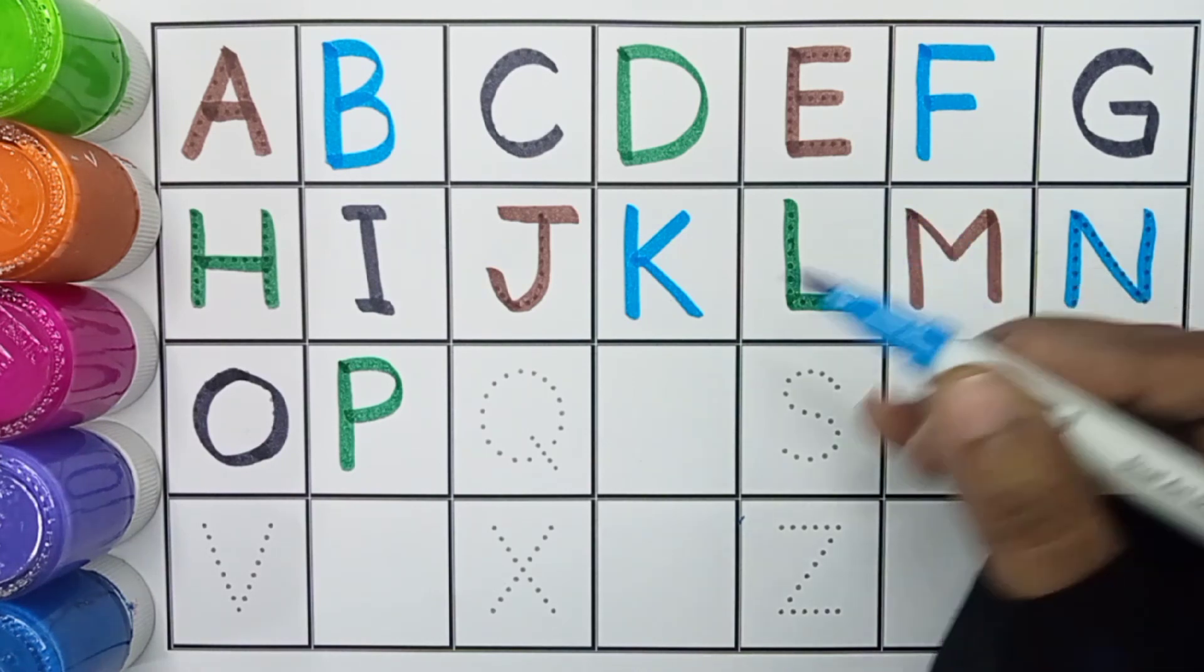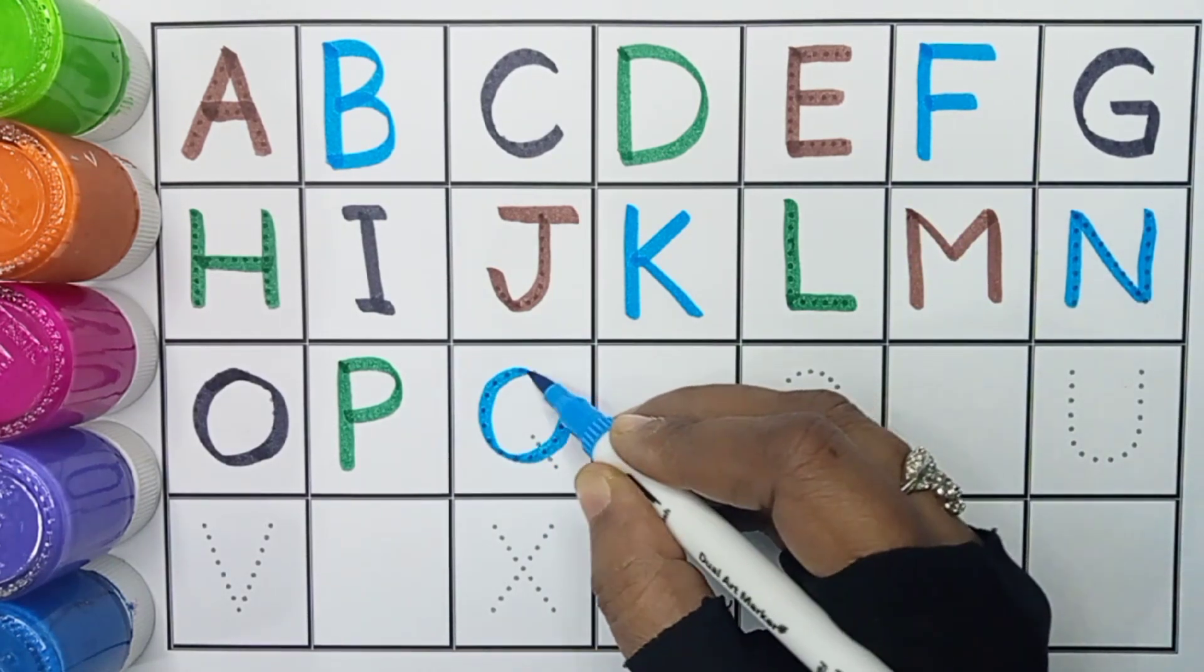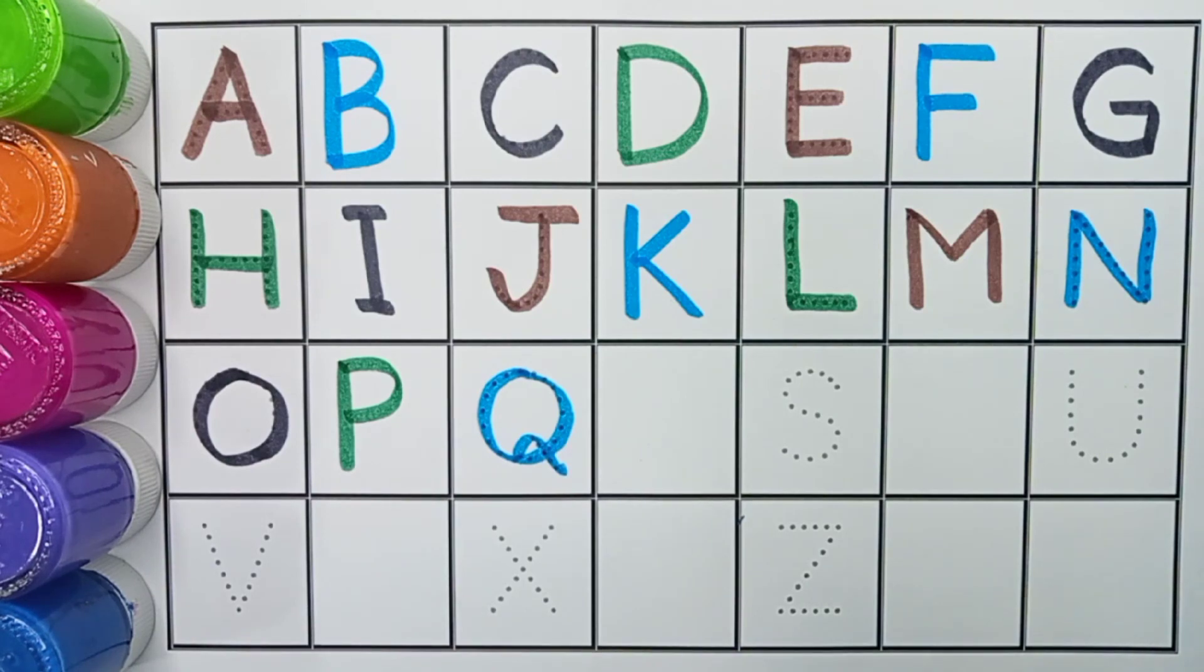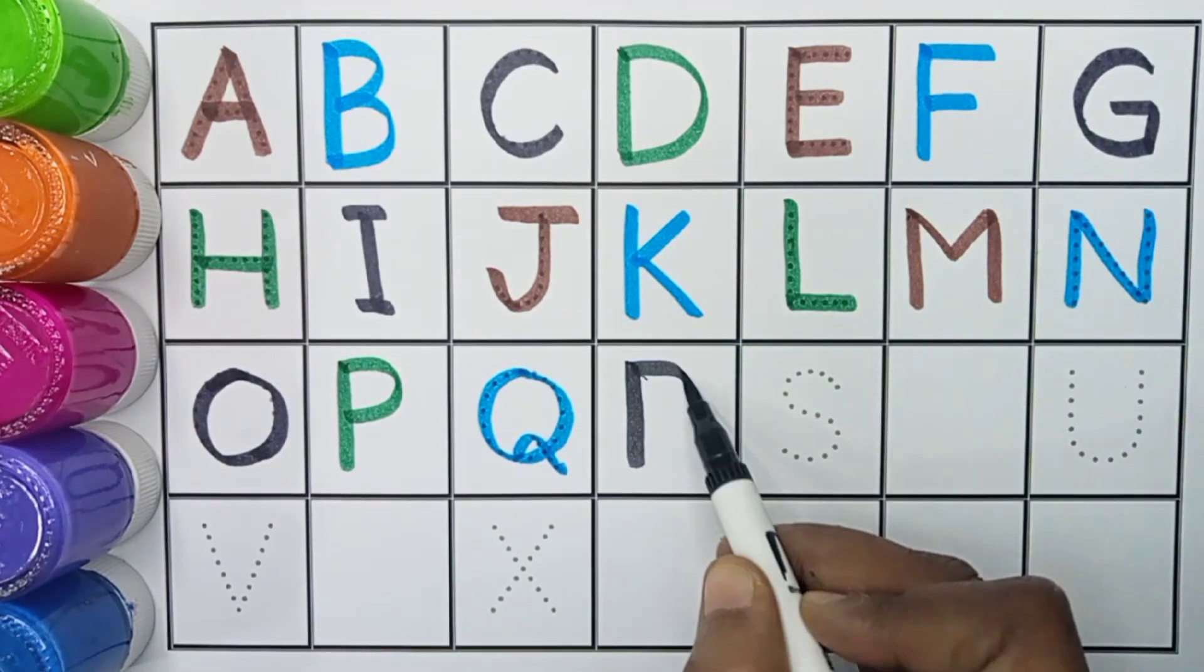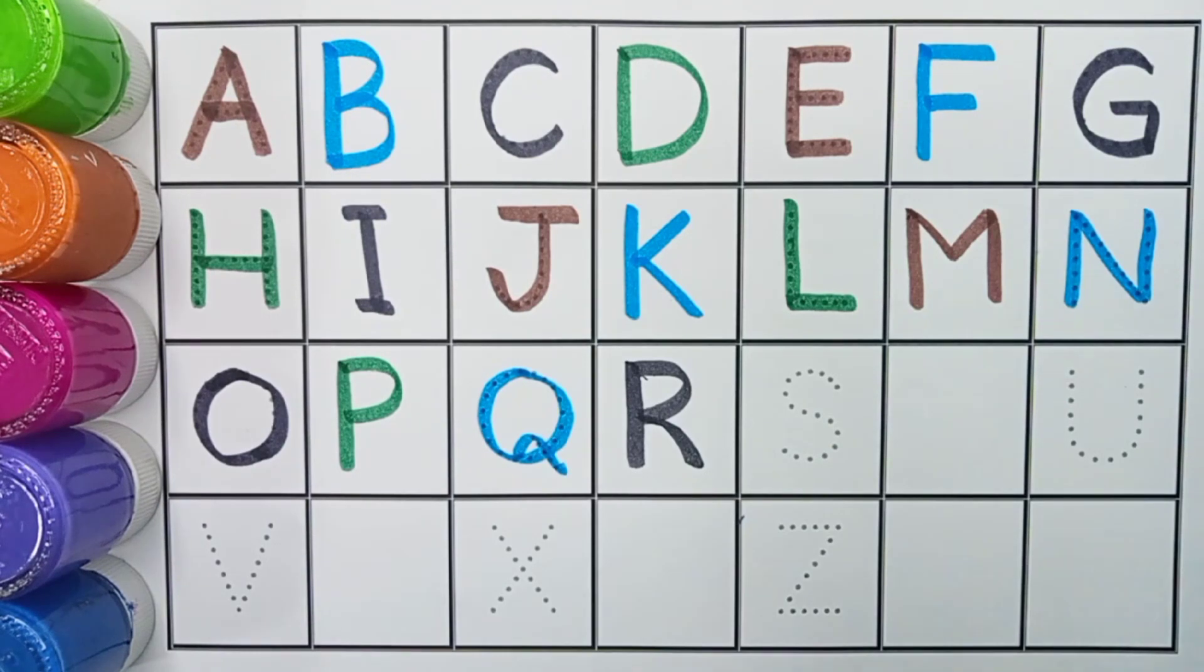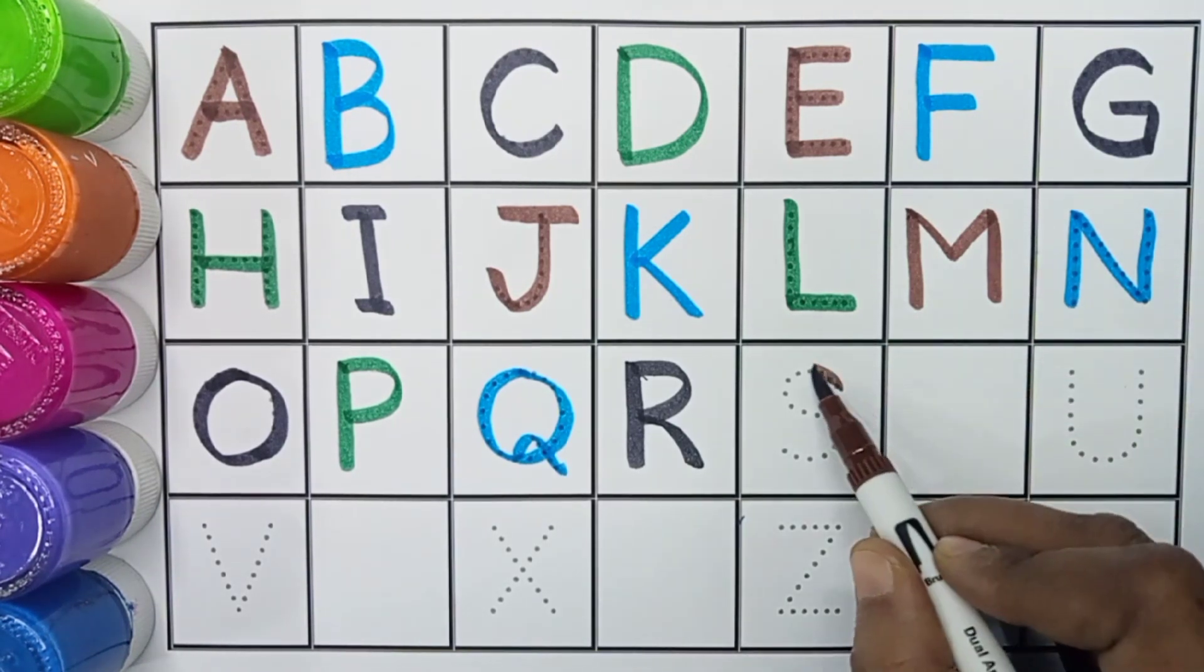Blue color. Q, Q for queen. Black color. R, R for rabbit. Brown color. S, S for sun.